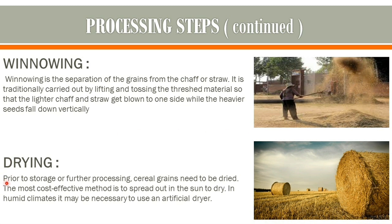After that we have drying. Prior to storage or further processing, cereal grains need to be dried. The most cost-effective method is to spread them out in the sun to dry. In humid climates, it may be necessary to use an artificial dryer. This is how the drying process looks.